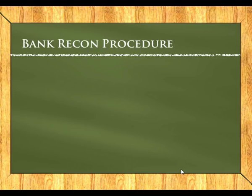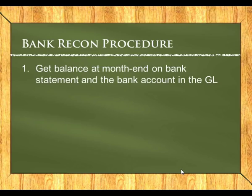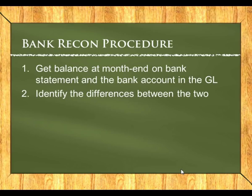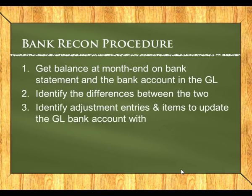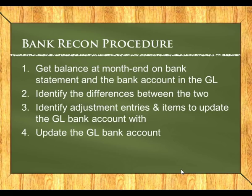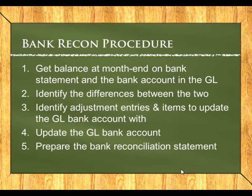The procedure we would follow to actually prepare a bank reconciliation would be: first, get the balances at month end on the bank statement and our bank account in the general ledger. Compare the two balances and identify the differences between them. Then identify any adjustment entries and items to update the general ledger — those items that appear on the bank statement but not in our records, and items in our records not on the bank statement. Then update our general ledger bank account with all items found on the bank statement which are not in our records. For the remaining items, we prepare the bank reconciliation statement, which will only contain outstanding deposits and unpresented checks.